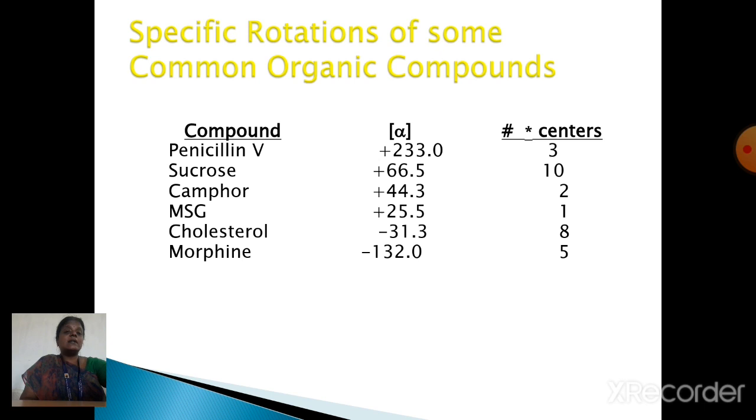Here we see some examples for positive and negative rotation. The compounds benzene, sucrose, camphor and MSG are having positive rotated values. That means these are said to be dextrorotatory compounds. And cholesterol and morphine are having negative optical rotation values, so these are definitely levorotatory. Thank you.